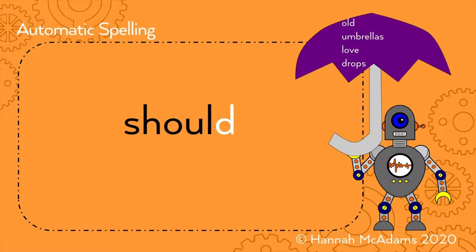Should is S-H and then O for old, umbrellas U, love L, drops D. Does that make sense? We have a couple like this.